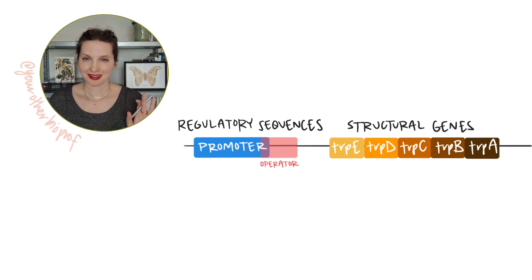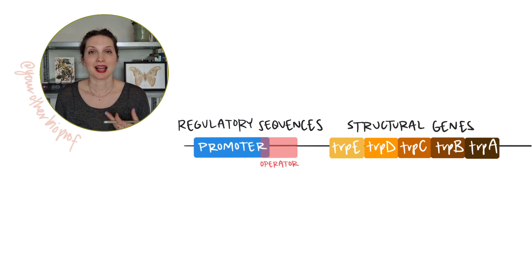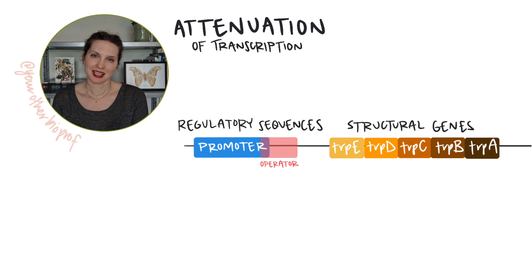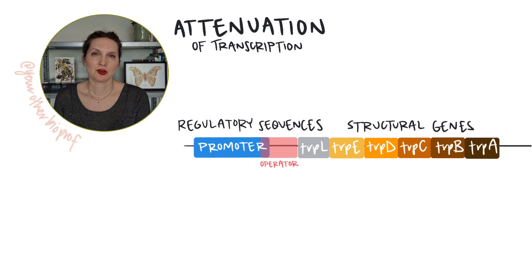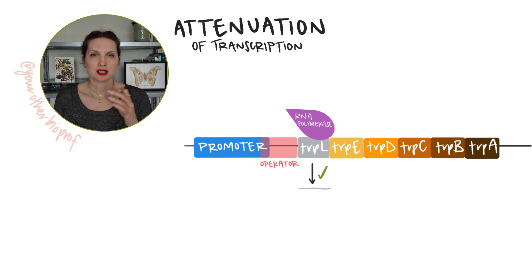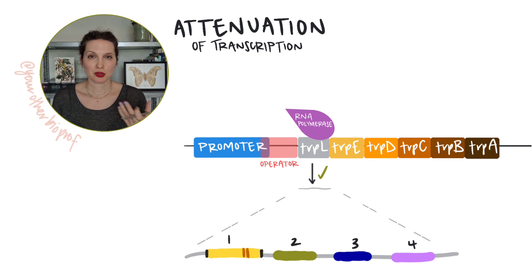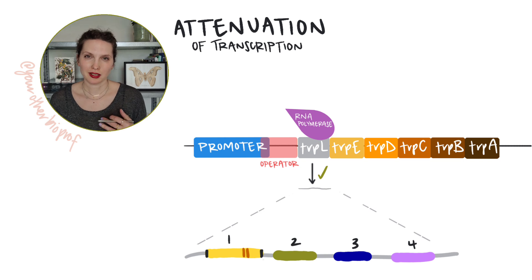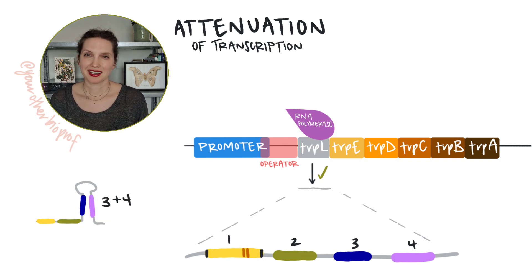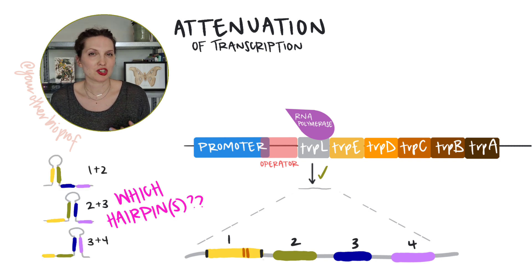The trp operon is a little bit different because it can be regulated in another way — by attenuation. You'll see attenuation used on operons involved in the production of amino acids. Just upstream of the structural genes is a region called the leader region, or trpL. When transcription is on, that leader region is transcribed and produces an mRNA that has four subregions or domains, and those regions have areas of complementarity — they can pair up. Pairing causes hairpins to form in the mRNA. Domain one can pair with domain two, two can pair with three, and three can pair with four. But each domain can only be involved in one hairpin at a time, so which hairpins form?